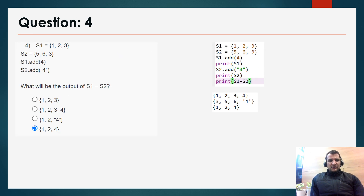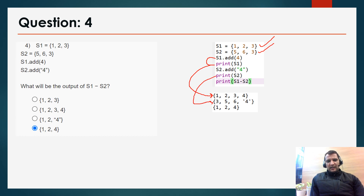Question 4: s1 is equal to this set, s2 is equal to this set, then s1.add(4) and s2.add(4) — note that 4 is in string form. What will be the correct output of s1 minus s2? In Spyder IDE, after adding elements, s1 prints as {1, 2, 3, 4} and s2 prints as {3, 5, 6, 4}. The output of s1 minus s2 is {1, 2, 4}, so the correct answer is option d.